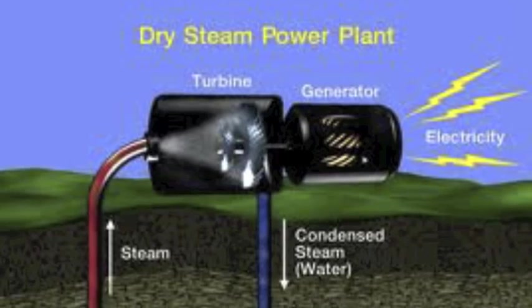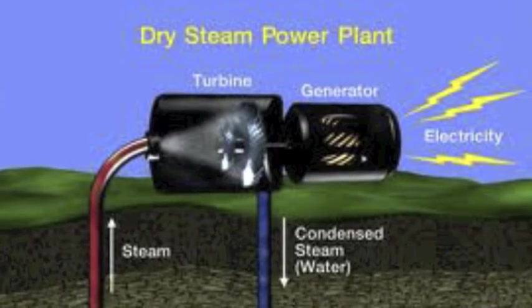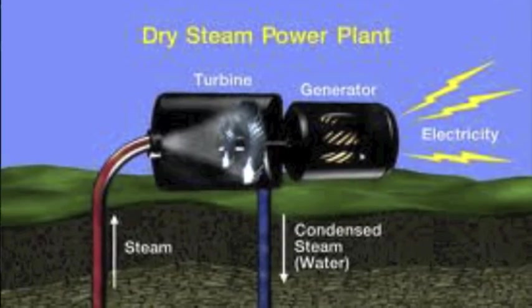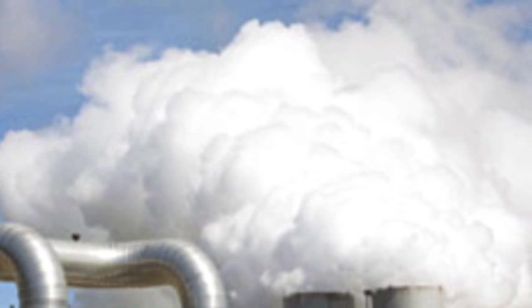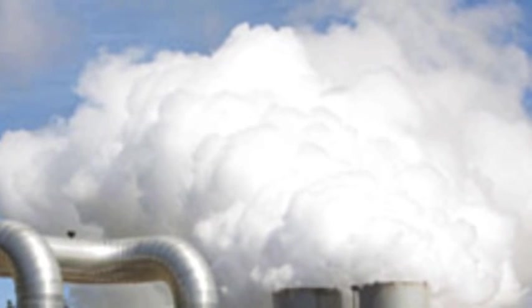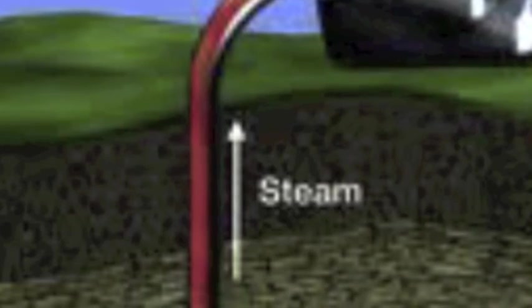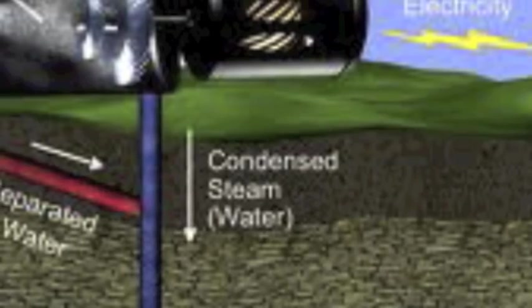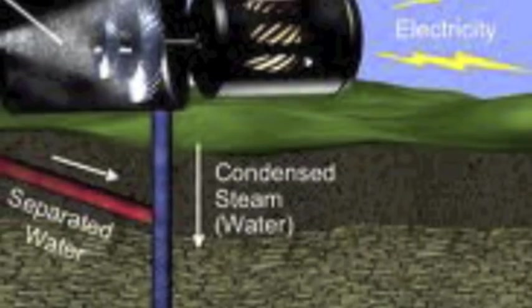The next power plant is a less common one called a dry steam power plant. Instead of water, the reservoir is filled with steam. The steam is piped into the power plant, and the tremendous force spins the turbine. The steam then condenses and is returned to the reservoir.